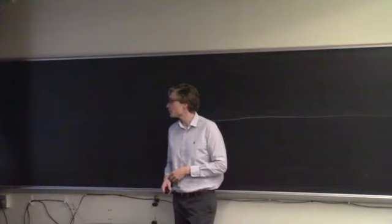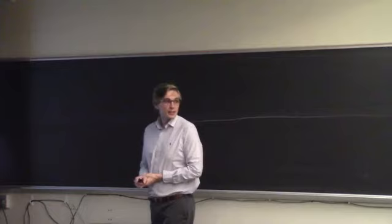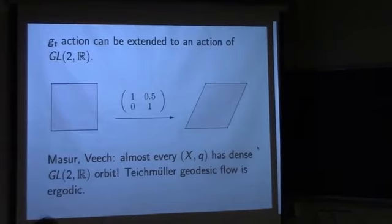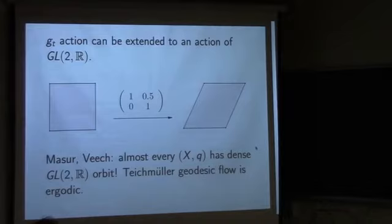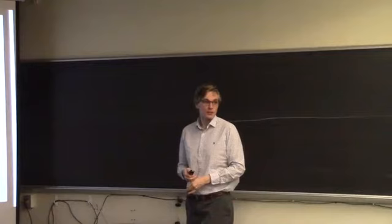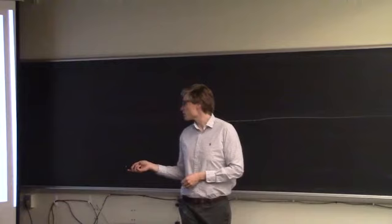This turns out to be a very complicated action. In the 1980s, Masur and Veech showed independently that almost every surface has a dense orbit — pretty amazing. If you pick a generic surface and I pick a very special, symmetric surface, with essentially just an affine change of coordinates via GL₂(ℝ), I can make my surface look arbitrarily close to yours. That's proven using ergodic theory. In fact, they showed something stronger: the Teichmüller geodesic flow for Mg is ergodic.